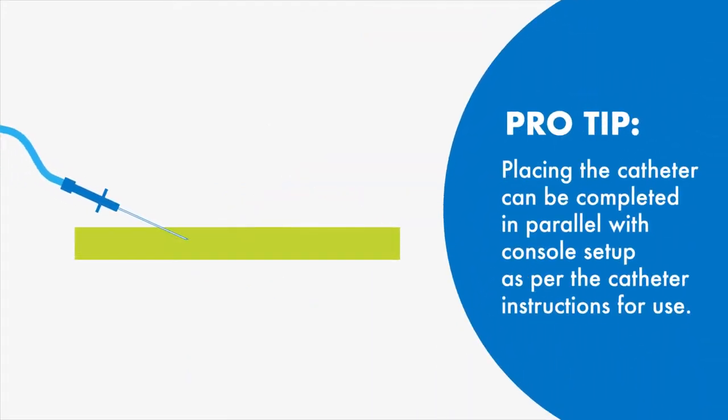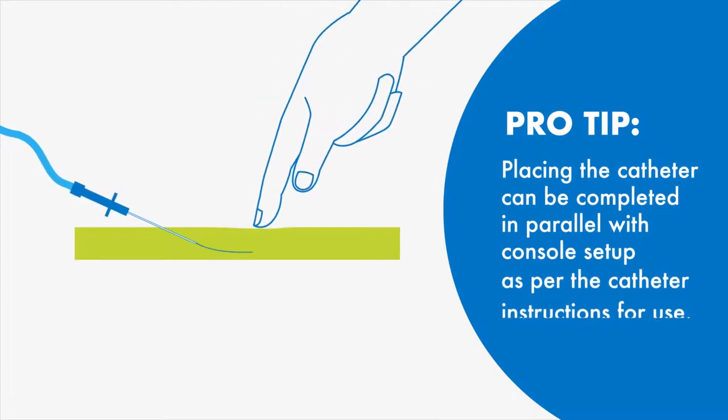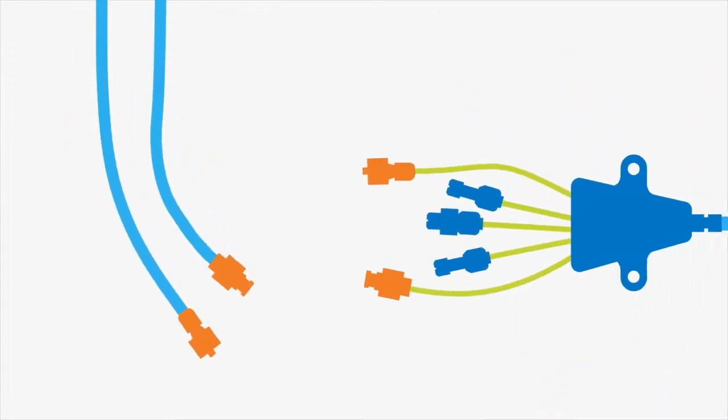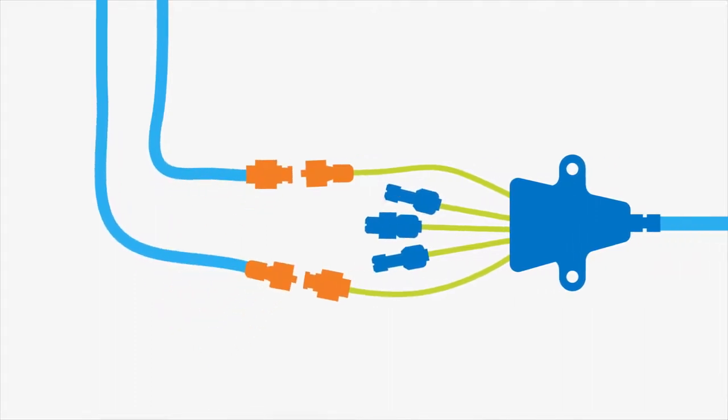Place the catheter using the standard Seldinger technique. Now connect the startup kit tubing to the catheter.